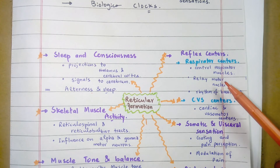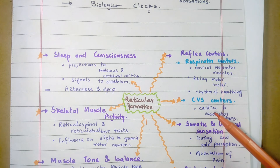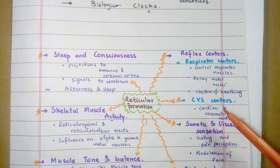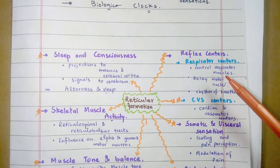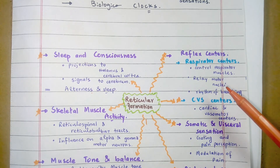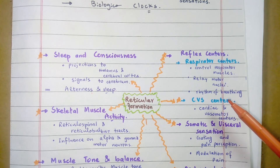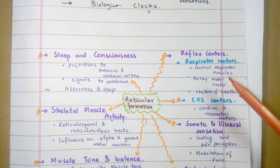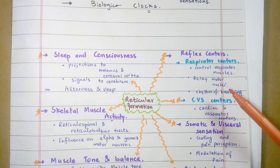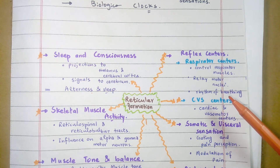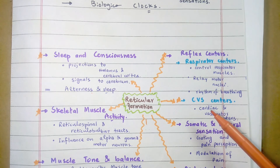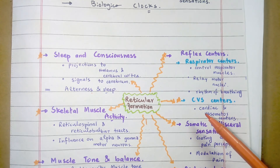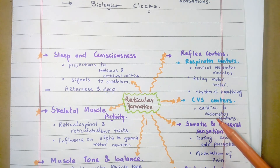Reticular formation has reflex centers — respiratory centers and reflex centers of the cardiovascular system. The respiratory centers of the brain stem that control the respiratory muscles are a functional part of the reticular formation, providing relay nuclei for motor coordination that enable the rhythmic signals of breathing. Reticular formation also possesses cardiovascular reflex centers, including the cardiac and vasomotor centers of the medulla oblongata.